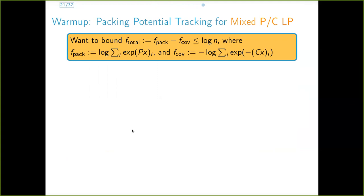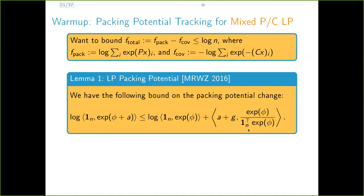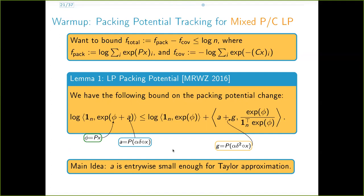In each step of the algorithm, the packing potential changes by at most the inner product displayed here. We use phi to denote px and a and g to denote the first and second order increments in px respectively. The main idea of the proof is that since the vector a is element-wise small, we can do a Taylor approximation.